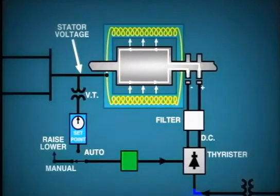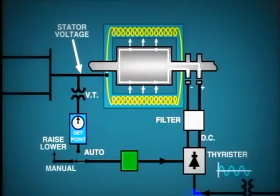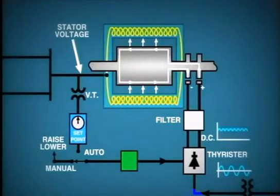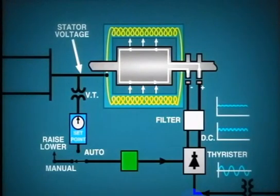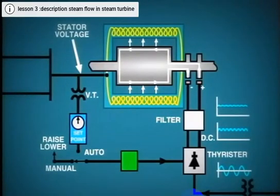The sine wave for the incoming three-phase AC voltage, which is applied to the rectifier, will look like this. After rectification, the DC output can be represented by this curve, and this may be further smoothed to look like this.